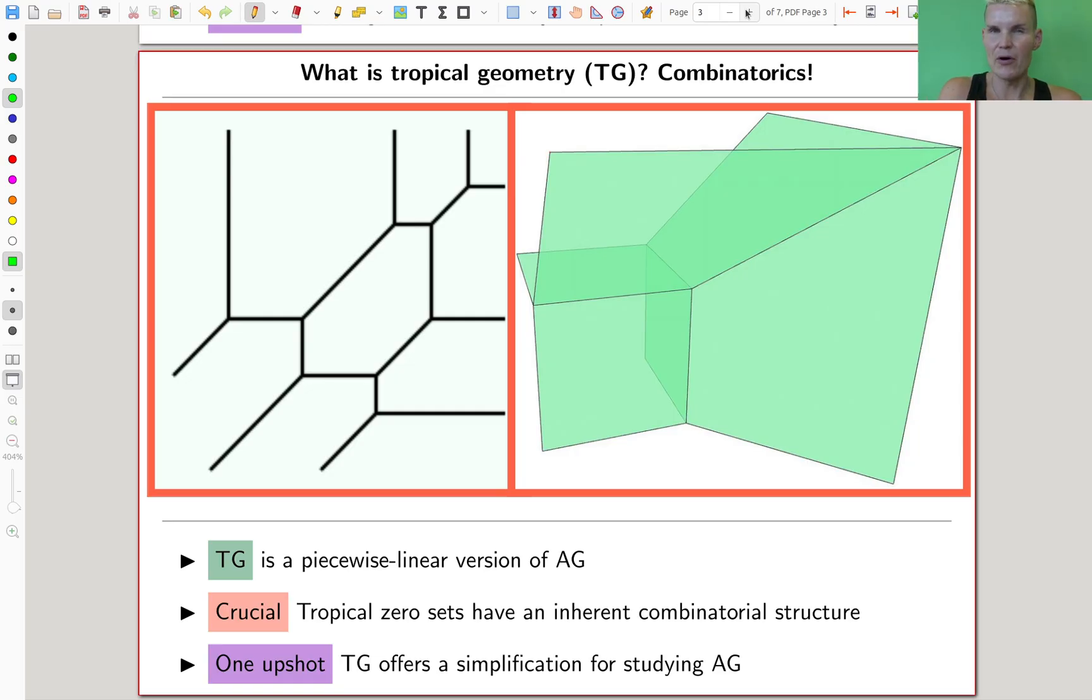Usually I would say reformulating a problem doesn't really solve it. An equivalent problem, just reformulated. Very often if it was difficult before, it's still difficult. So tropical geometry is not just a reformulation, not an equivalent reformulation, but it's kind of a smart, different perspective on the same topic without being equivalent.